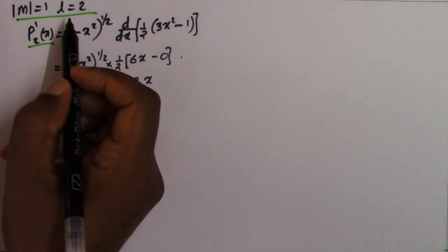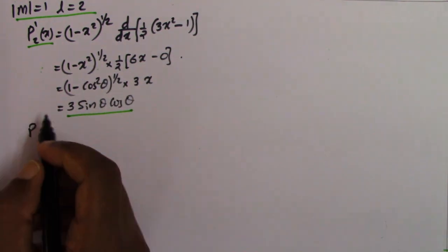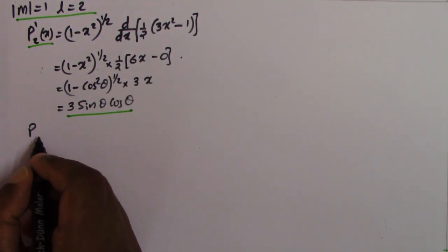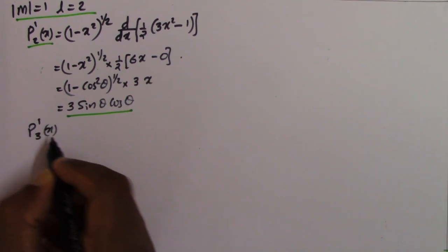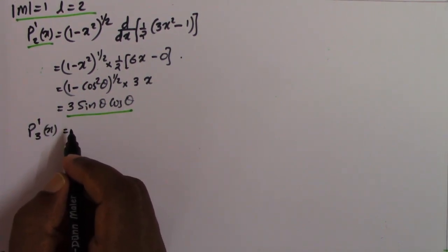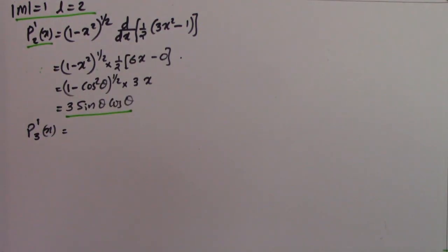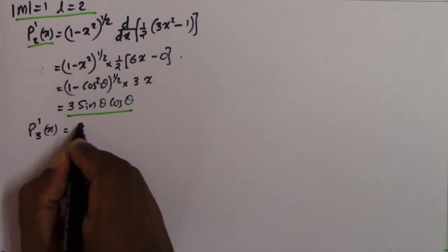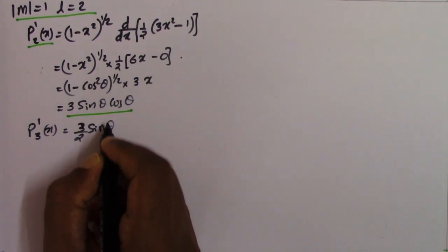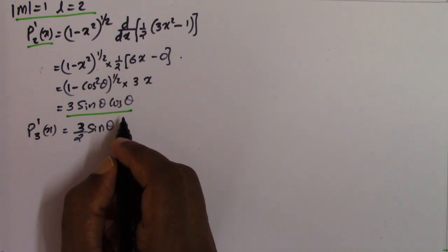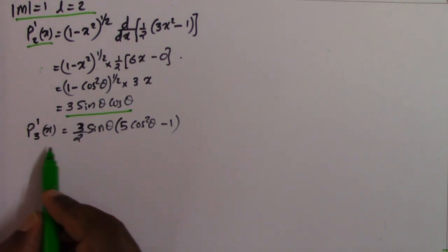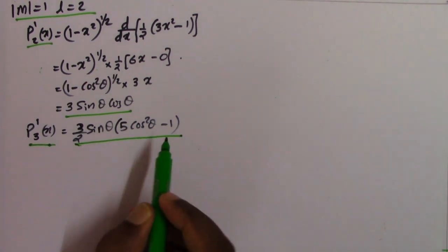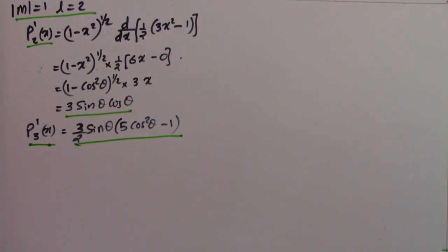You can also calculate for m=1 and l=3. In that case P_l^m(x) is P_3^1(x). When l=3 and m=1, the value will be (3/2)sinθ·(5cos²θ - 1). So P_3^1(x) equals (3/2)sinθ·(5cos²θ - 1). You can calculate it similarly.